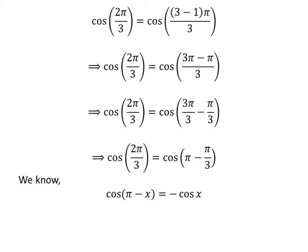We know the famous trigonometry identity: cosine of pi minus x is equal to minus cosine of x. The proof of the identity has been explained in the video appearing in the upper right corner. The link is also given in the description section.